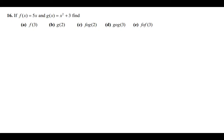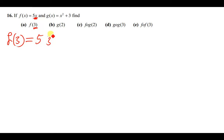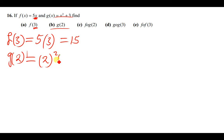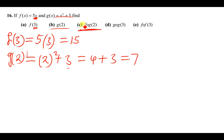Let's begin solving the question. To find f(3), we simply replace x in f with 3, giving us 5 × 3 = 15. To find g(2), we replace x in g with 2, giving us 2² + 3 = 4 + 3 = 7.